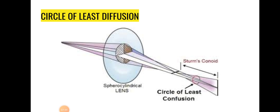In mixed astigmatism, one light is focusing in front of the retina and another behind it. If we are able to place the circle of least diffusion exactly on the retina, the person will be able to see the image clearly. This is the significance of the circle of least diffusion, and this principle is used in Jackson cross-cylinder testing during subjective refraction.